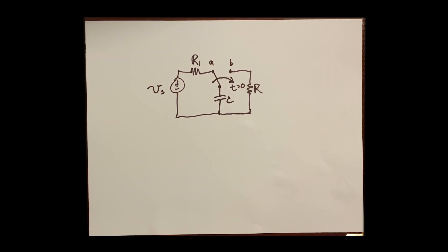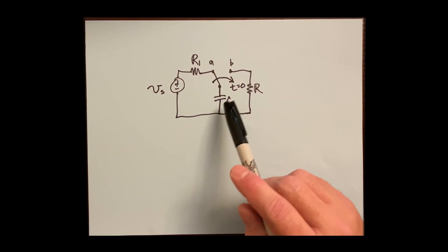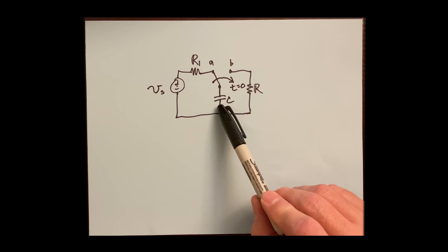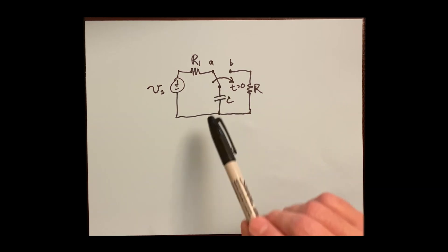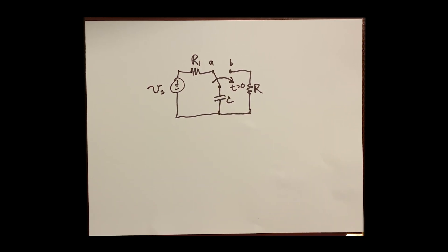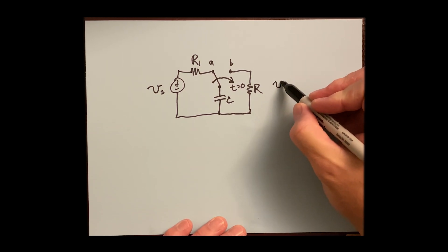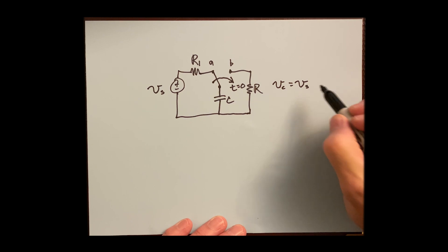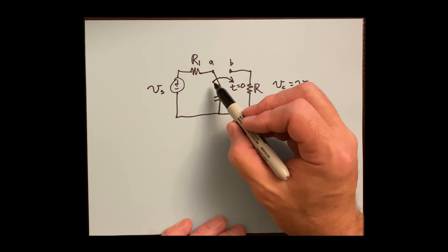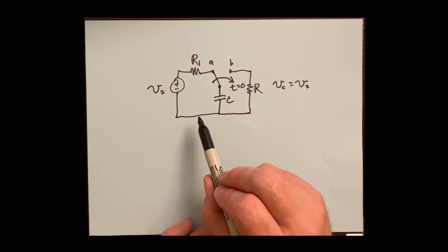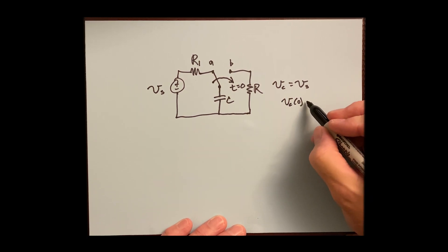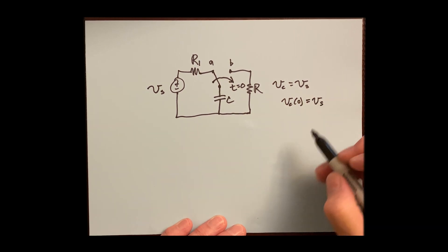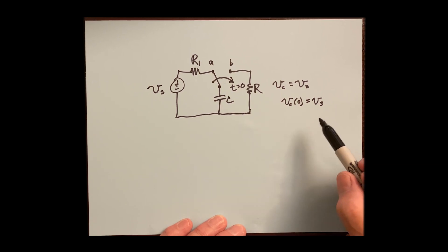Before T equals zero, the switch is in position A. Current flows, builds up charge on the capacitor plates, and the capacitor becomes charged. When the potential difference across the capacitor equals the source voltage, no more current flows — the capacitor is fully charged. This happens when the voltage on the capacitor equals V_S. If we flip the switch after it's been in position A for a very long time, the voltage on the capacitor at zero equals V_S. The voltage on a capacitor cannot change instantaneously.